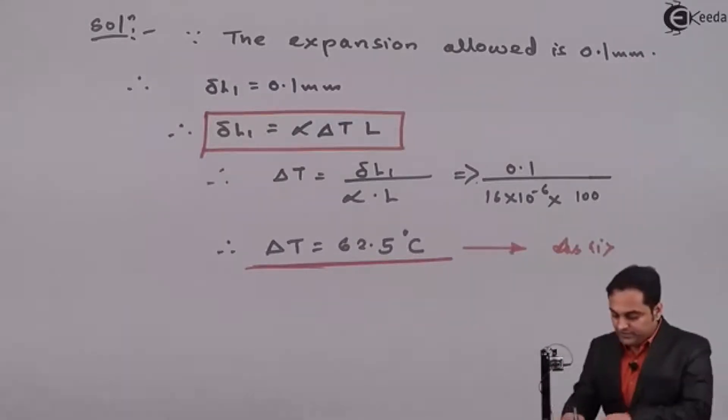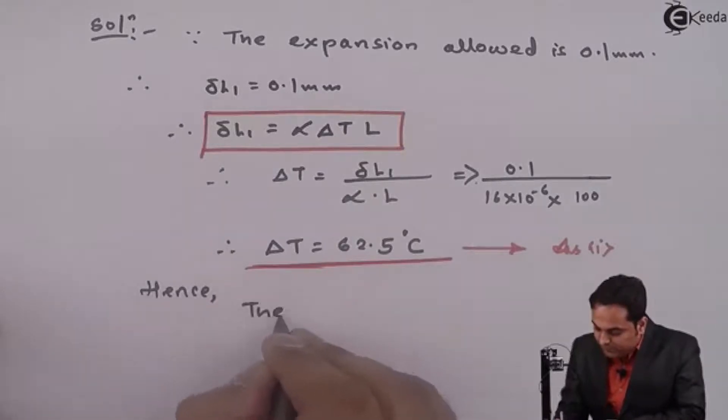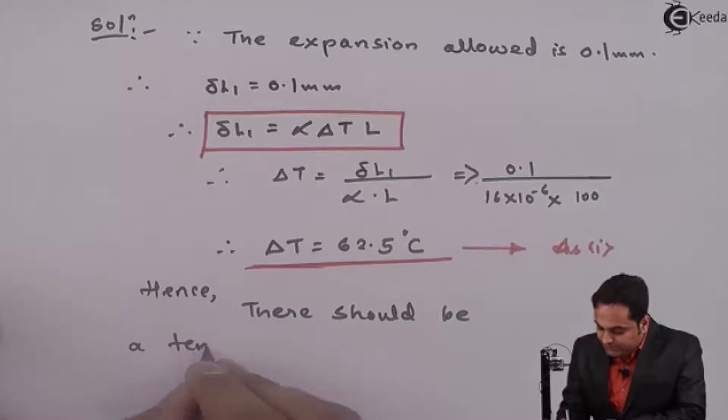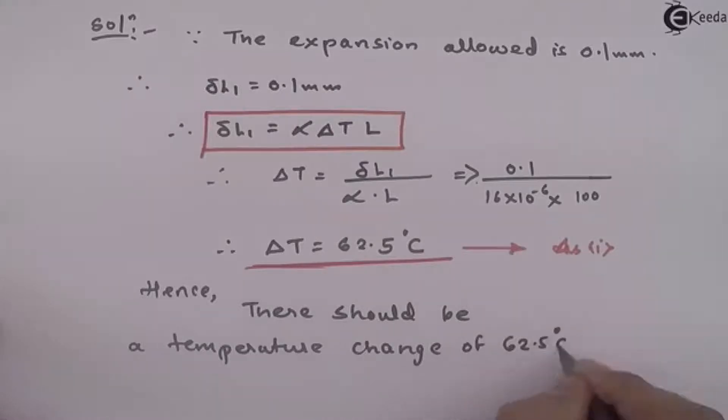So this is the first answer. We have found out the temperature that will close the gap. So I'll say that hence there should be a temperature change of 62.5 degrees Celsius which will close the gap of 0.1 mm.